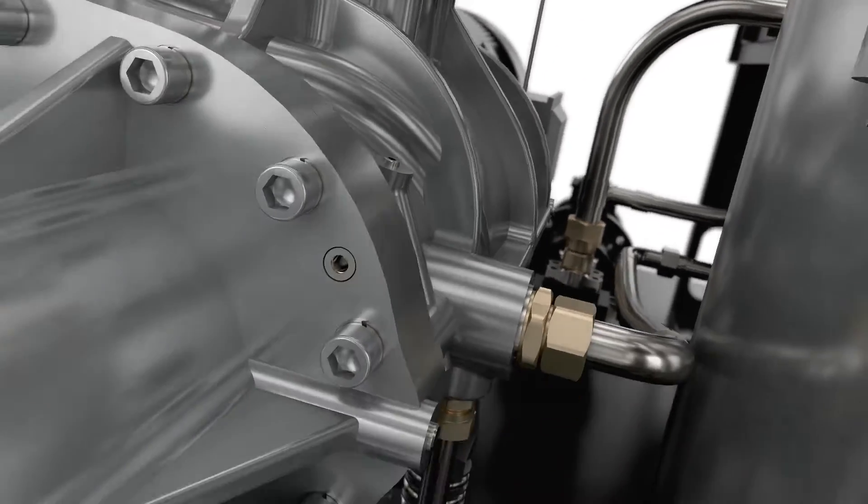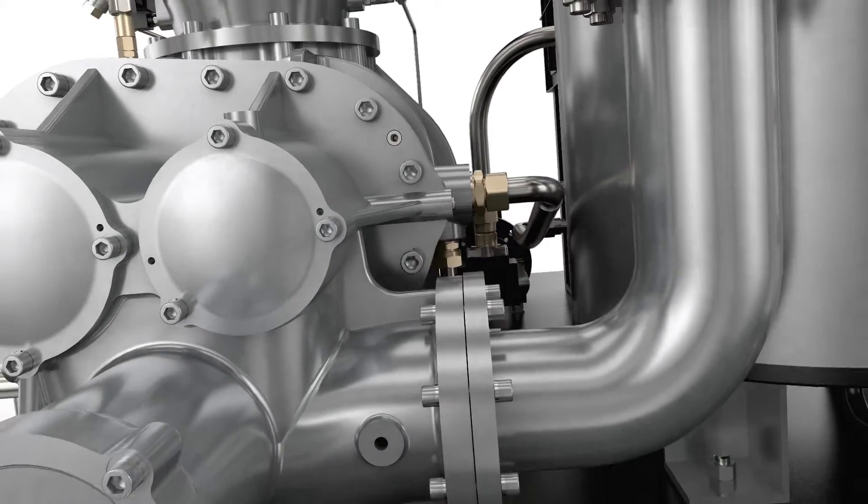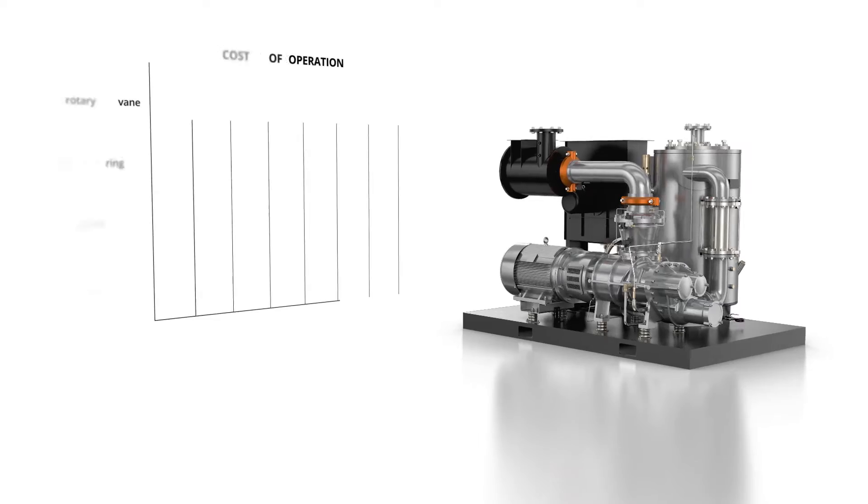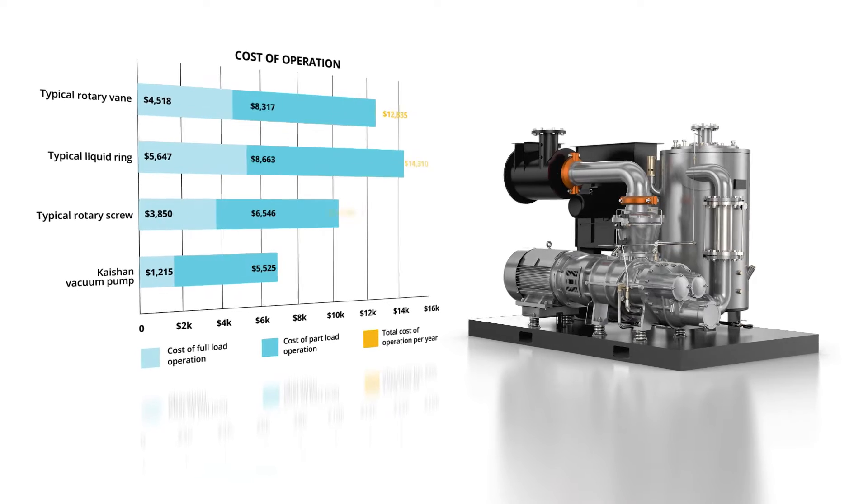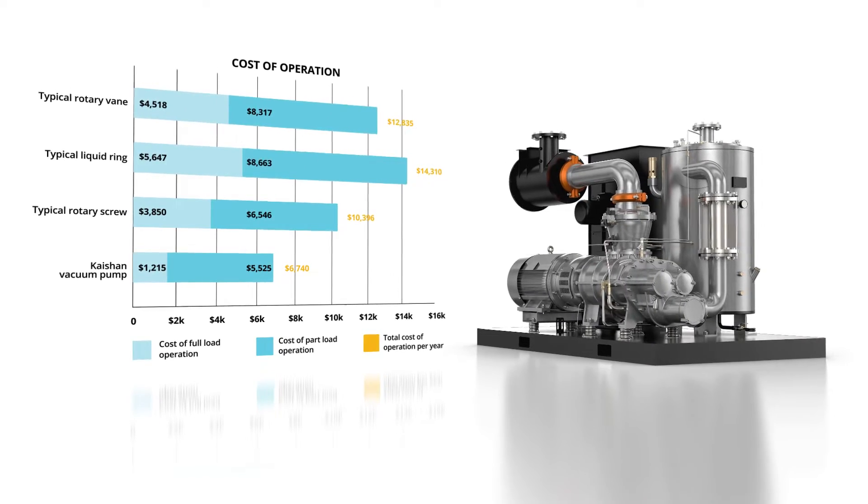Rotary screw vacuum pumps have a high cubic foot per minute flow rate with energy efficient BSDs. They hit a sweet spot between the initial investment and maintenance costs, which leads to a lower total cost of ownership.